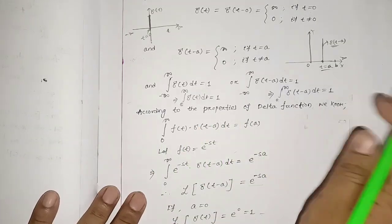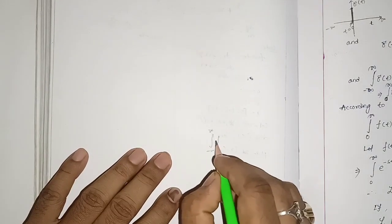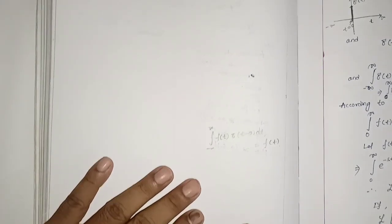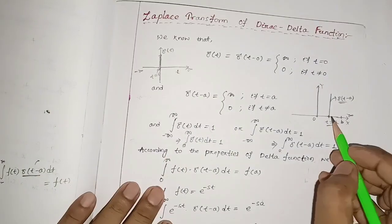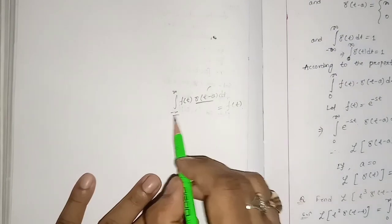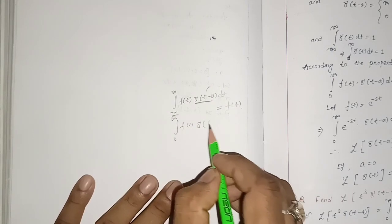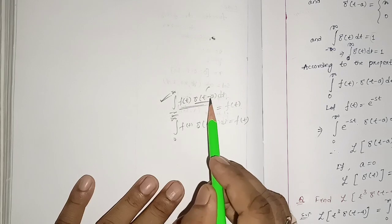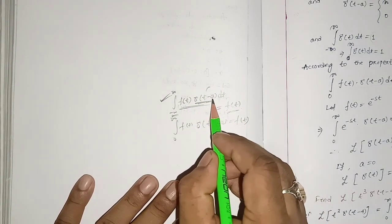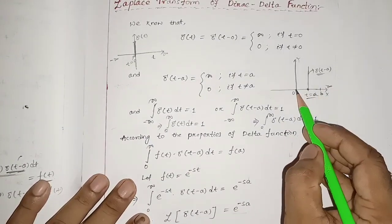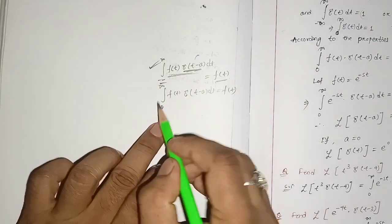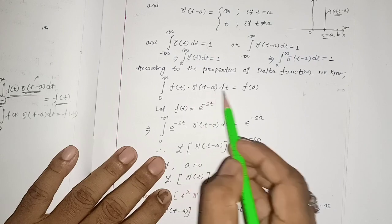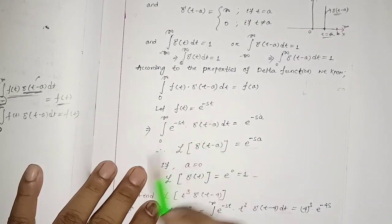Another property of the delta function: we know that ∫_{-∞}^{+∞} f(t) δ(t - a) dt = f(a). Since a exists above 0 on the positive axis, this limit can also be written as ∫₀^∞ f(t) δ(t - a) dt = f(a). This is the basic sifting property of the delta function, and since a is on the positive x-axis, we can use 0 as the lower limit instead of minus infinity.